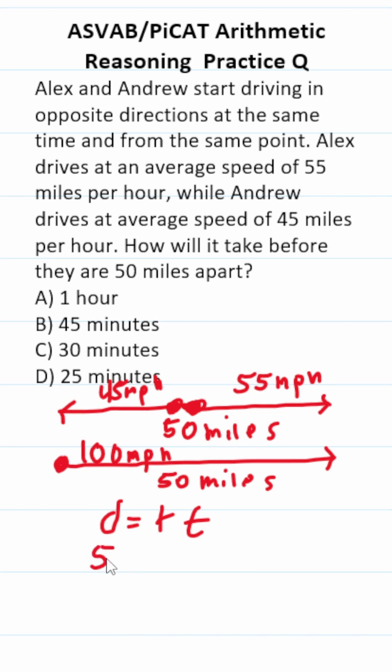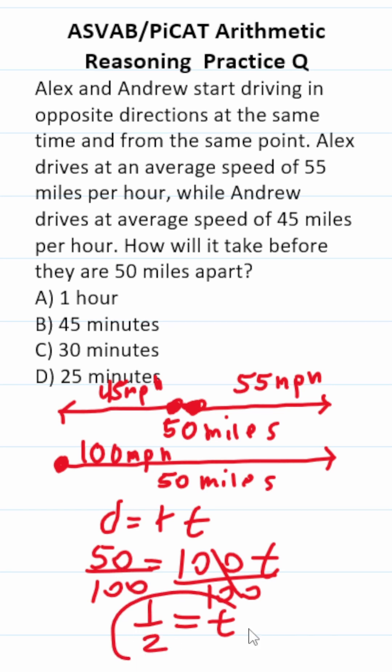We know that they're covering 50 miles at 100 miles per hour, and if it's solved for T, all we have to do is divide both sides by 100. This crosses out here leaving you a T on this side. 50 over 100 is the same thing as one half, so it's going to take them half an hour to be 50 miles apart.